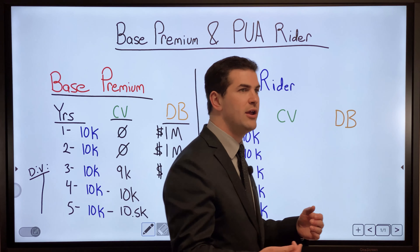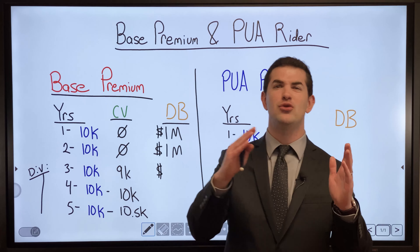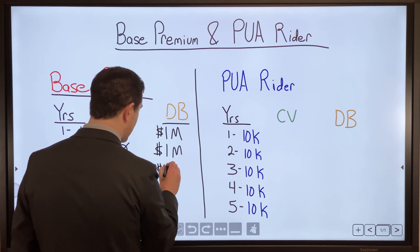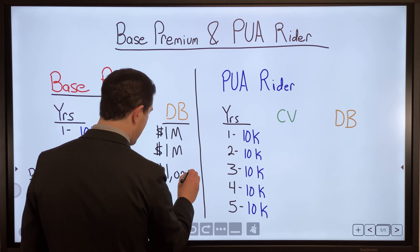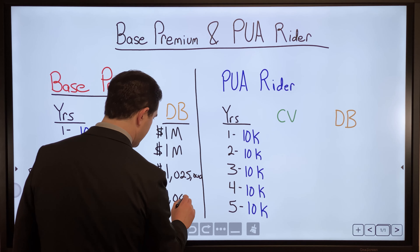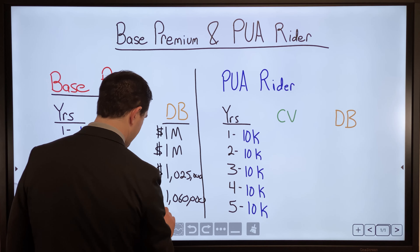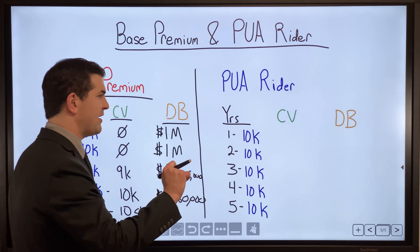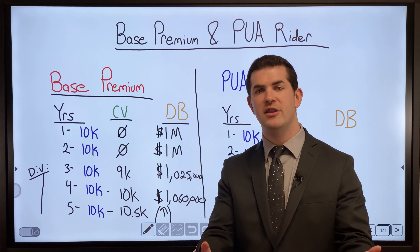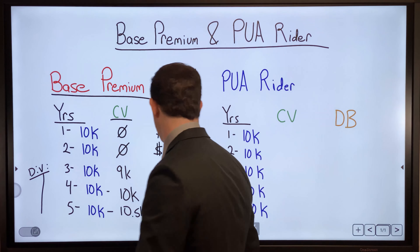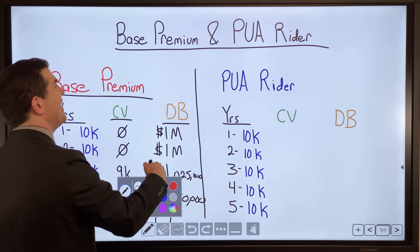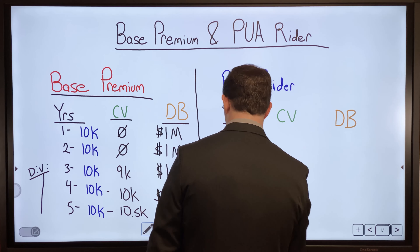If you were ever shown a traditional whole life policy that had zero cash value in the beginning and eventually built cash, it was likely a policy where 100% of dollars were put into the base premium. As cash value builds, it also builds your death benefit over time. Because the death benefit has a direct relationship to the MEC limit, the base premium will have a fair impact on the MEC limit when setting up the policy.